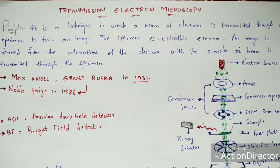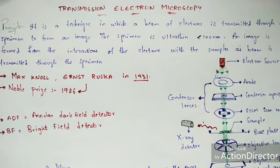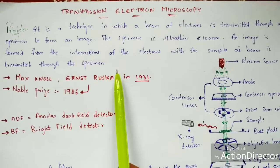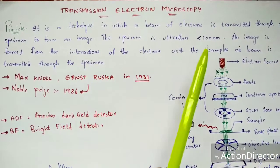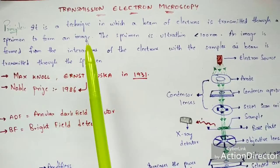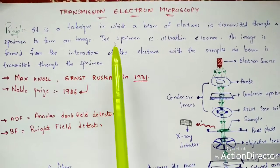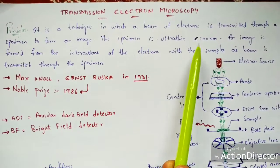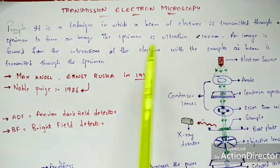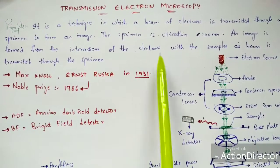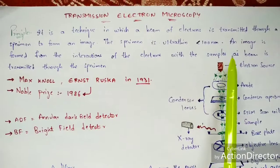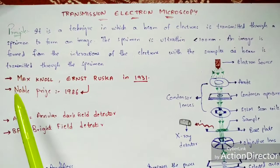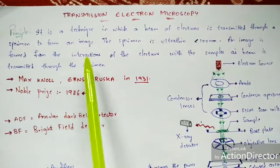In this video, let us discuss about transmission electron microscopy. According to the principle, it is a technique in which a beam of electrons is transmitted through a specimen to form an image. The specimen is ultra thin, which is less than 100 nanometers. An image is formed from the interactions of the electrons with the sample as the beam is transmitted through the specimen.